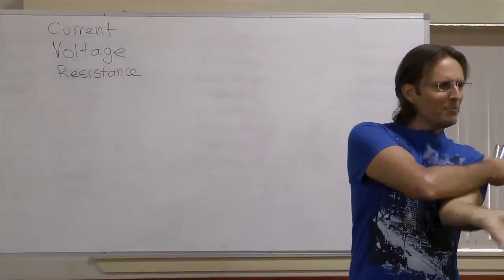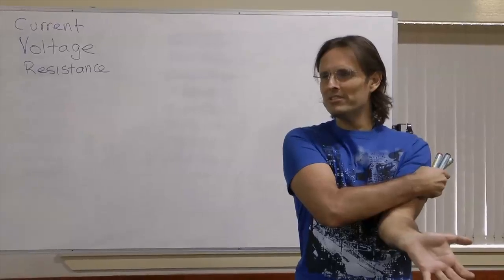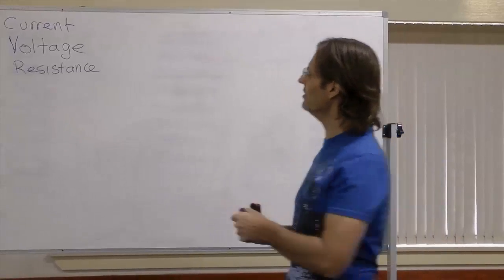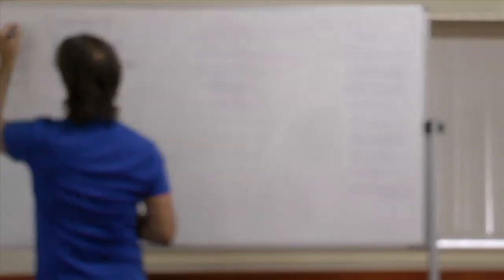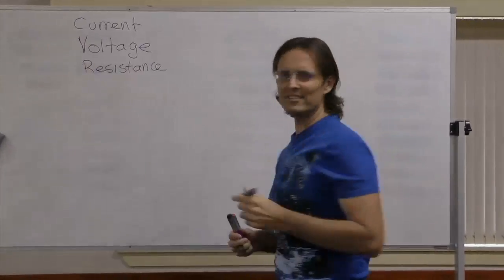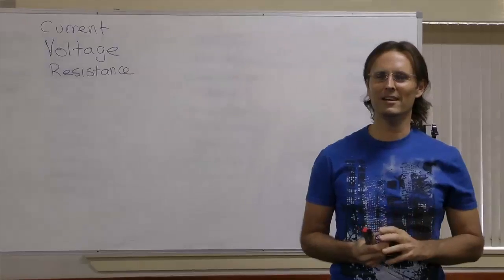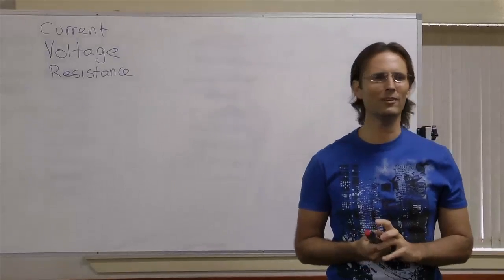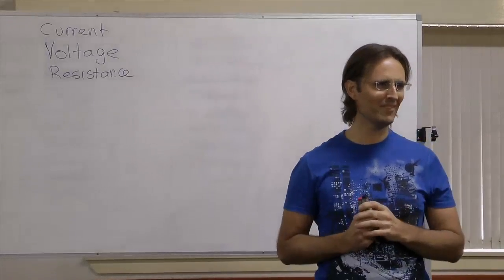Let's start with the basic definitions of what are called current, voltage, and resistance. These are the basic electrical properties we'd like to talk about first. I find the best way to describe these is to actually describe them like a water catchment system.